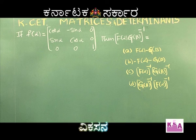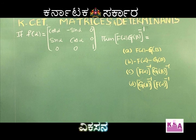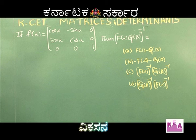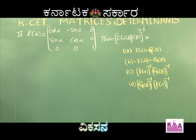The next question: if f(α) = [cos α, -sin α, 0; sin α, cos α, 0; 0, 0, 1], then [f(α)·g(β)]⁻¹ (the whole inverse) equals which option? Option A: f(-α)·g(-β). Option B: -f(-α)·g(-β). Option C: [f(α)]⁻¹·[g(β)]⁻¹. Option D: [g(β)]⁻¹·[f(α)]⁻¹.